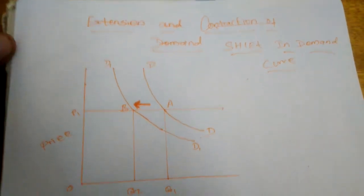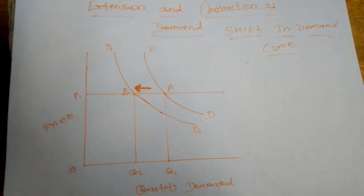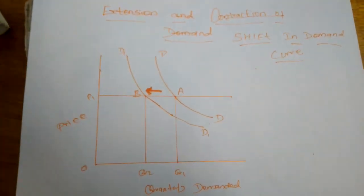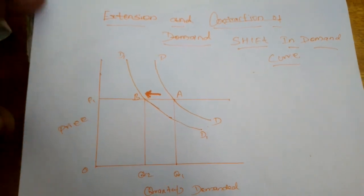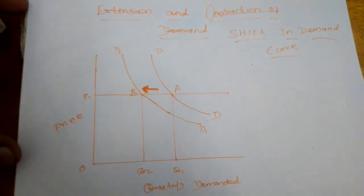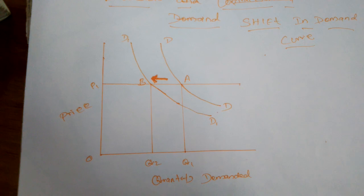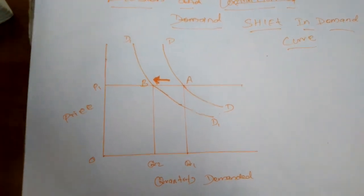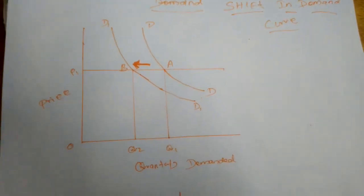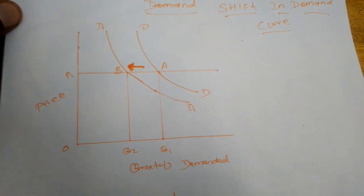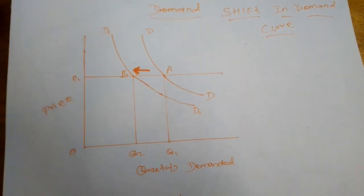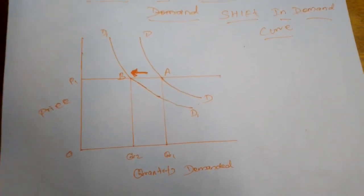Next is the shift in demand curve. Here the entire demand curve shifts from its existing place — for example, from A to B or B to C. The demand curve changes due to variables other than its price in the general demand function. Normally, demand is determined on the basis of price, but there are other determinants as well.